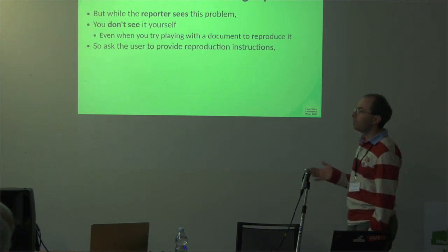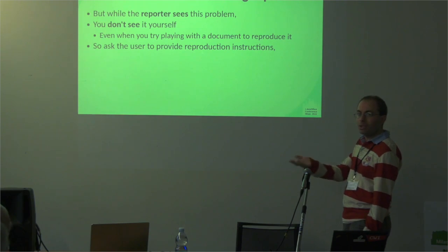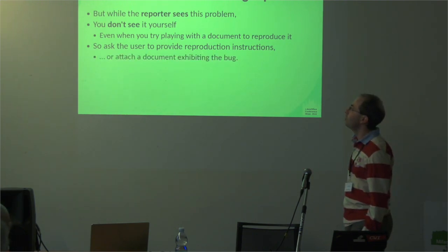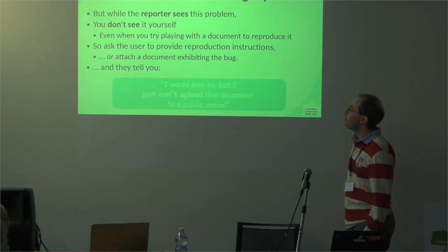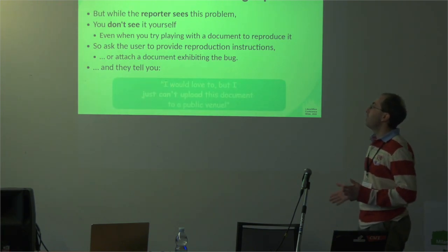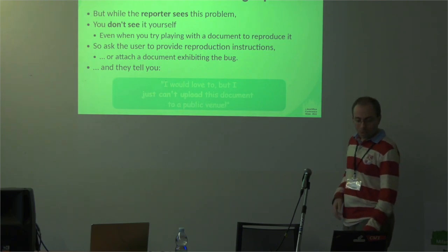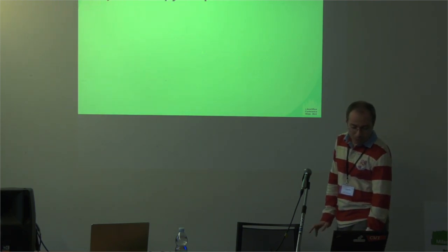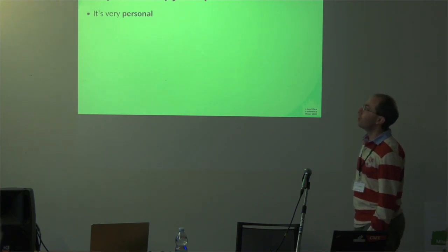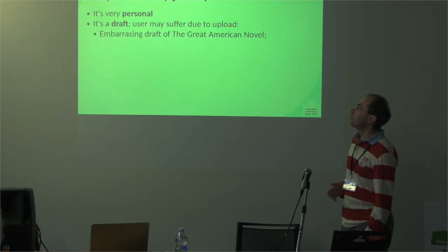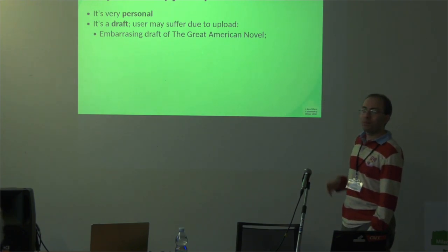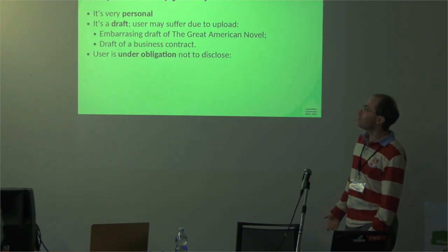So you go back to the bug page and tell the user: please give me a reproducer — a document that exhibits the bug, or link to it or attach it. And then they tell you: I would really love to do that, but I just cannot upload this document to a public venue. So why can't they just upload their document? Maybe it's personal, or it's a draft, and publishing the draft would be a problem.